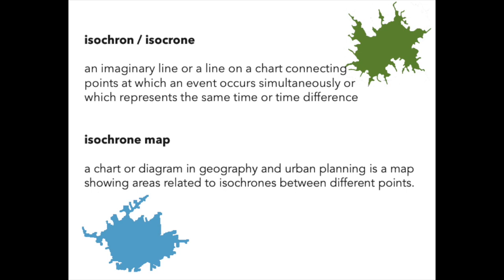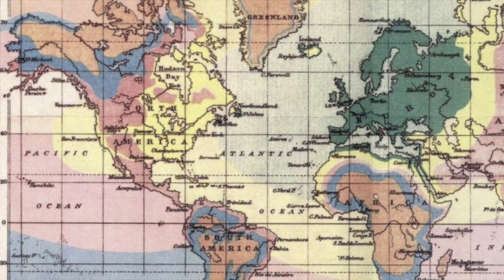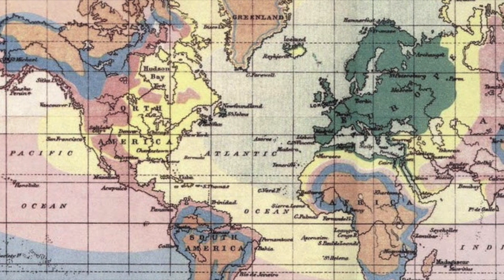From the Greek word chronos meaning time, an isochrone is a line connecting points for an event that occurs or represents the passage of time. An isochrone map is a chart or diagram used by geographers or planners to show areas of related isochrone lines or points. Arguably the earliest example of an isochrone map is this 1880s map made by mapmaker Francis Galton, who began imagining a series of maps based on his trips beginning at his home city in London. In figuring out how long a trip would take, he could advise travelers and sailors.